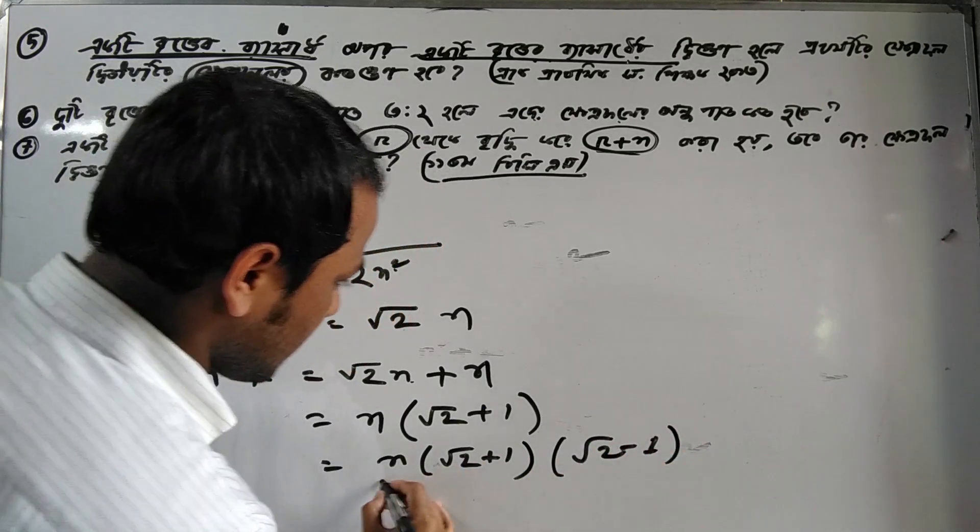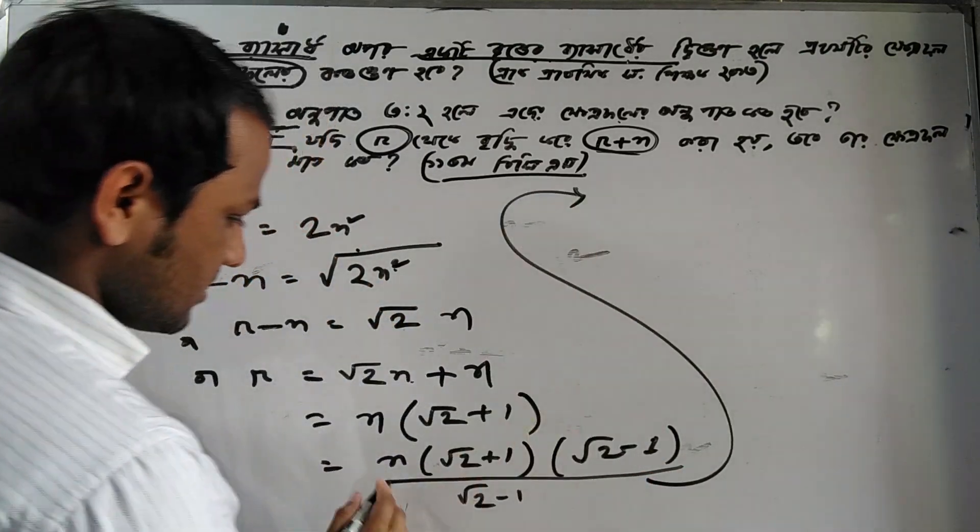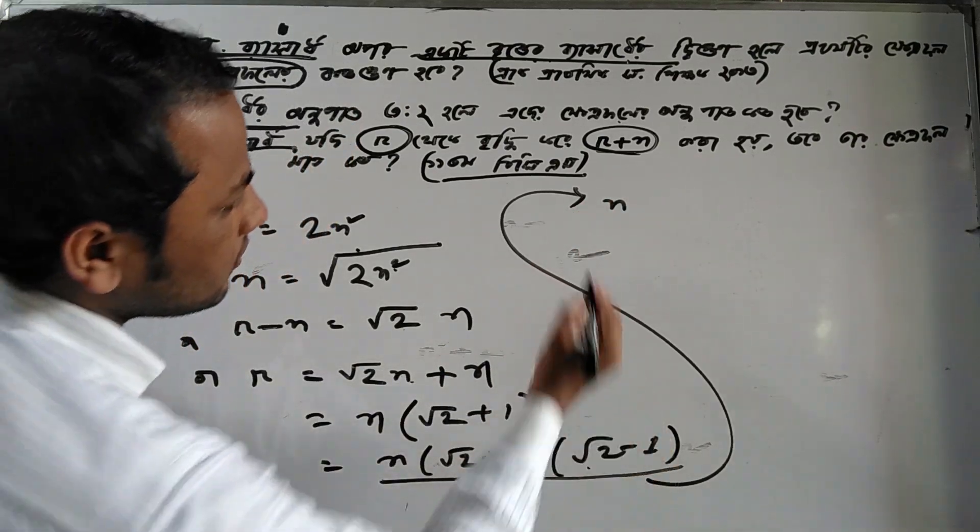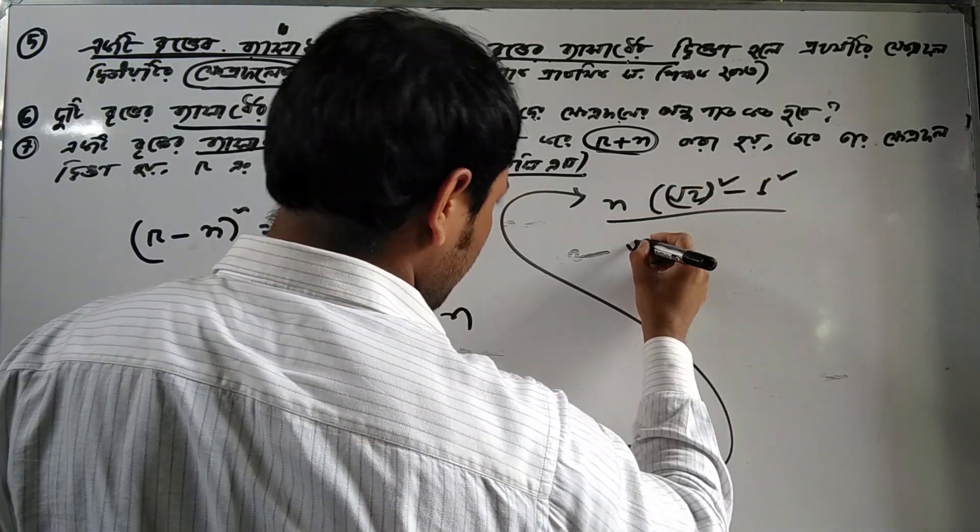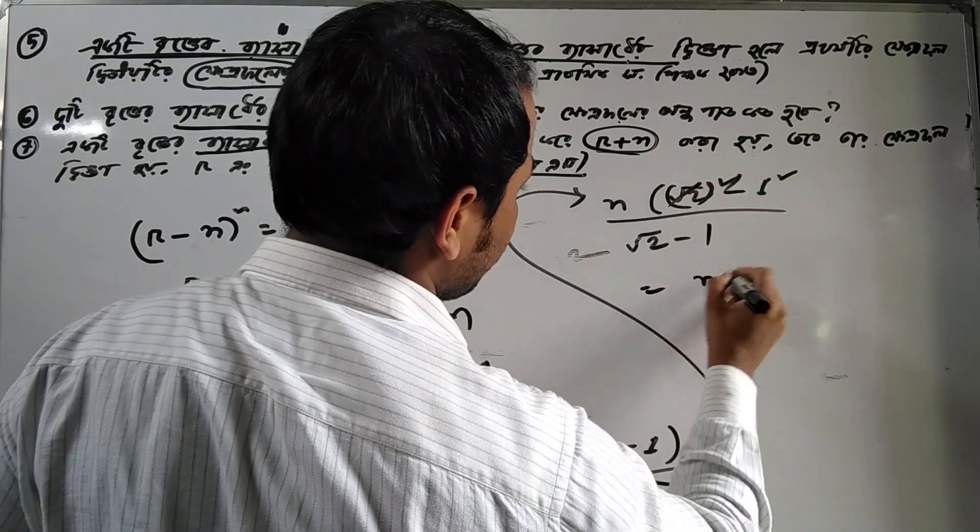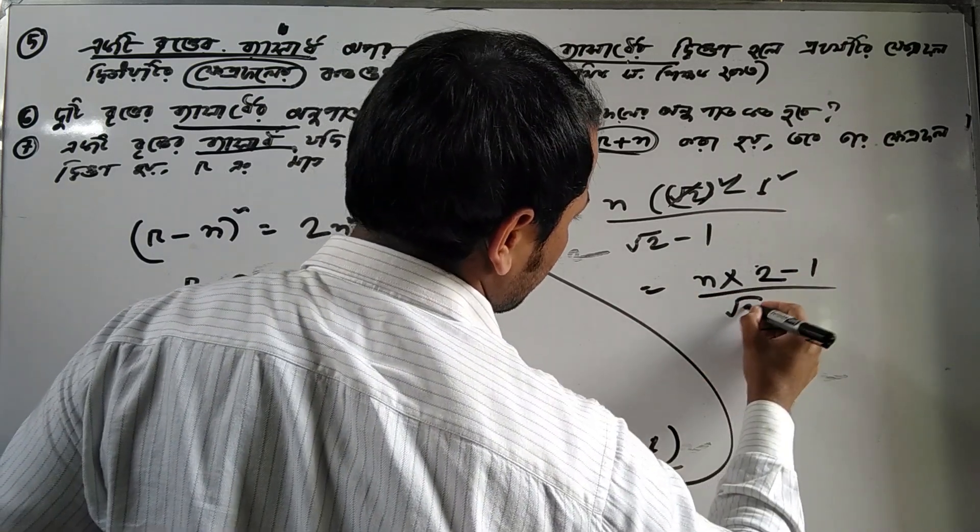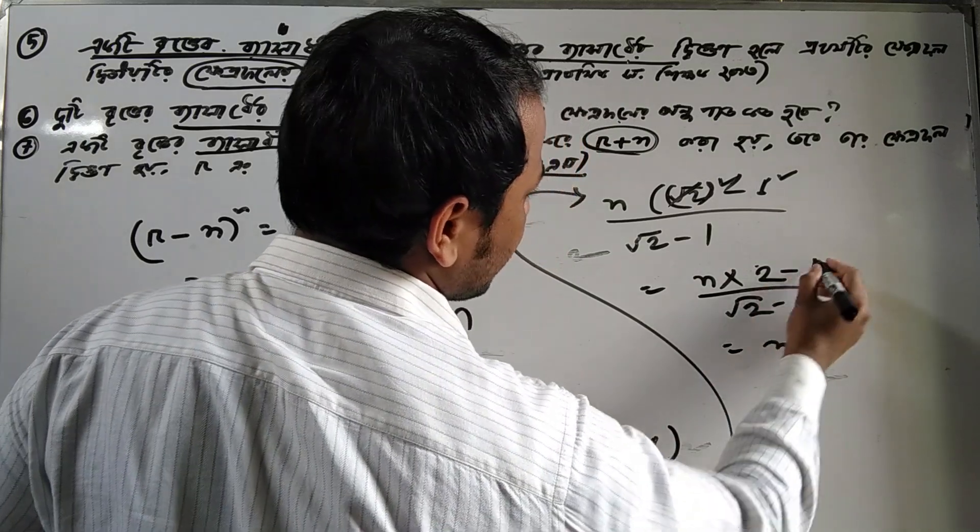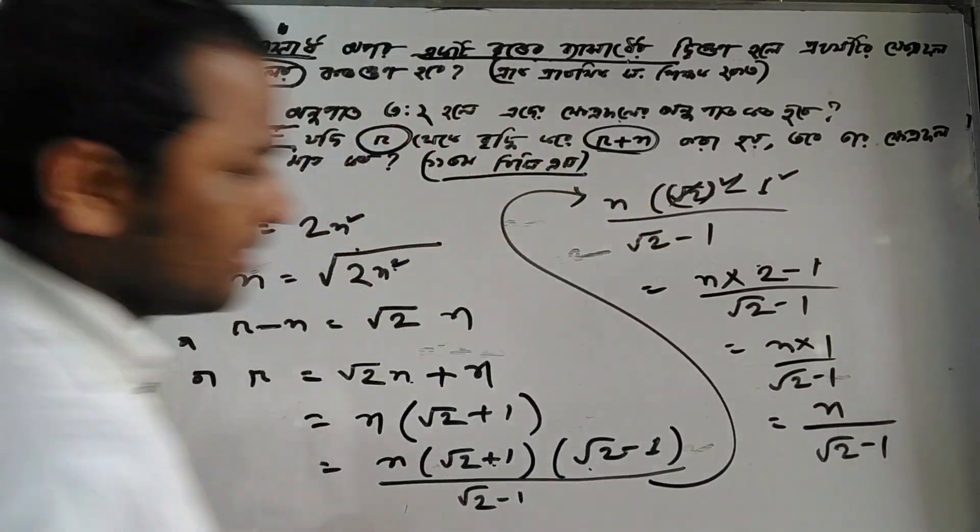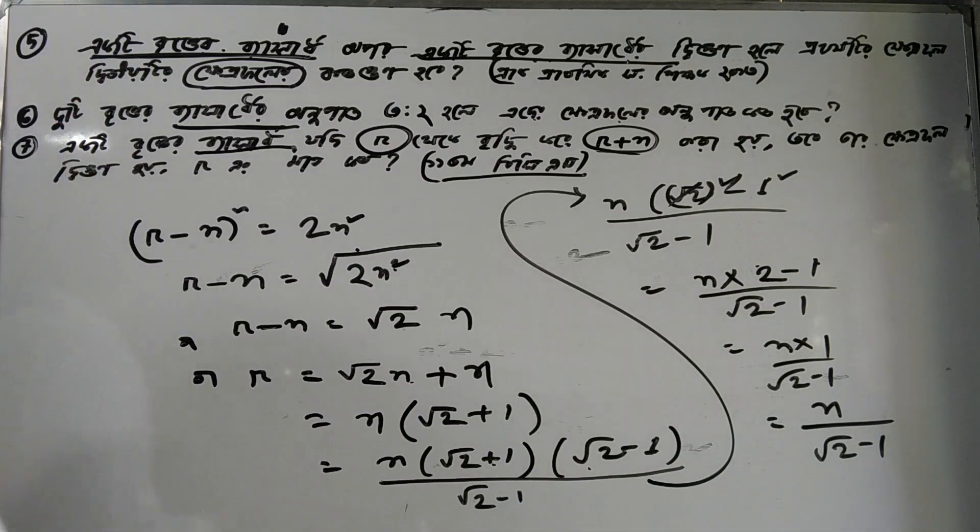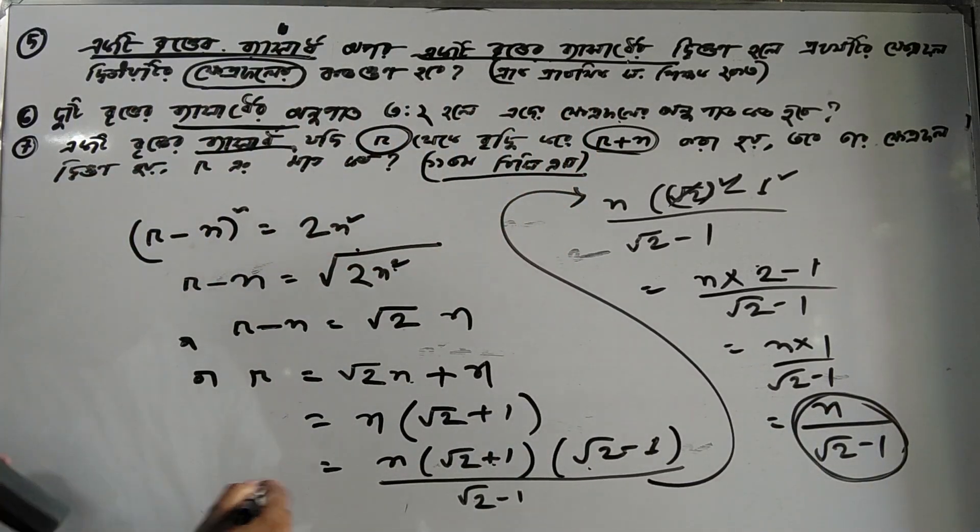To verify, we multiply by (root 2 minus 1). Using the formula (a plus b)(a minus b) equals a squared minus b squared, we get n times (2 minus 1) equals n. This confirms option B is correct, which shows r equals n(root 2 plus 1).